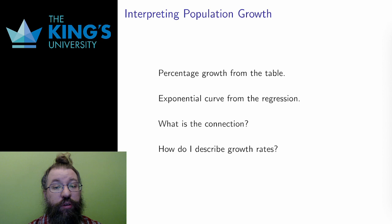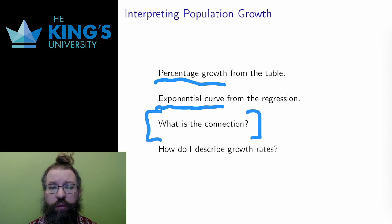So an exponential regression fits the population. That leads me to an interesting observation. In the data, I used percentage growth to understand the system. I concluded that the system was somewhat consistent, growing on average at about 18.83% per year, albeit with some notable variation. In the regression, I matched an exponential function. But this is the same data. That means there should be a connection between percentage growth and exponential functions. What is that connection?